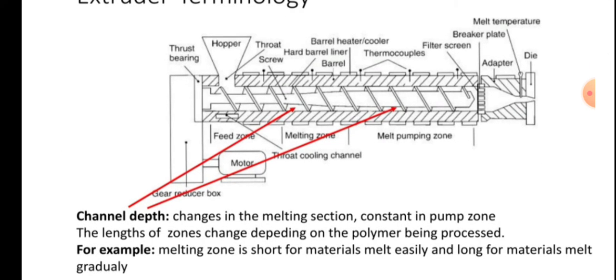Gear reducer box. Canal depth changes in the melting section, constant in pump zone. The length of zones changes depending on the polymer being processed. For example, melting zone is short for materials that melt easily and long for materials that melt gradually.